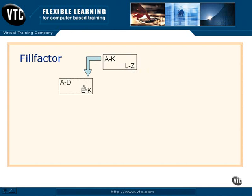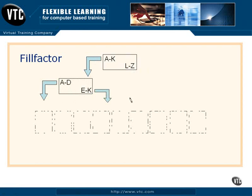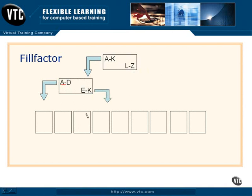Then at the next level, it has divided the data into A to D and E to K, and it now knows to go this direction or that direction. What it's looking for is that particular piece of information up here in this index level, and then it knows exactly where to go in the data page to find that particular piece of information.